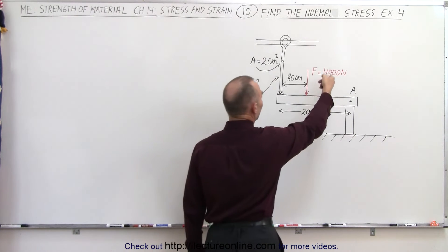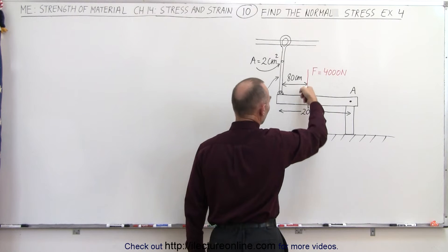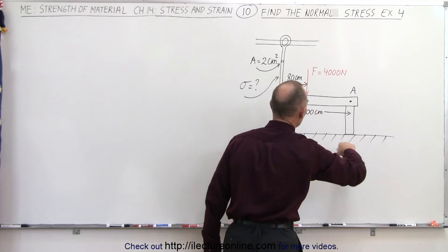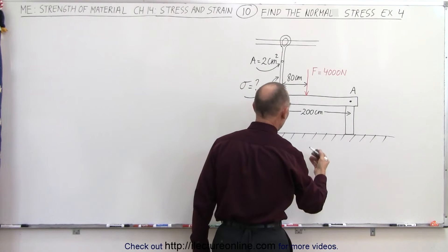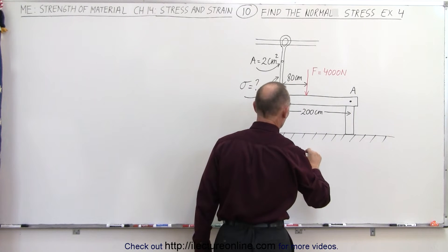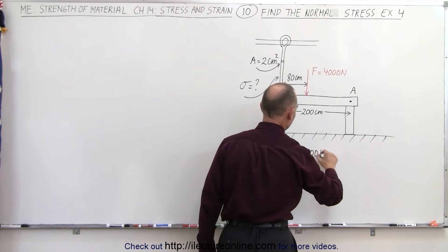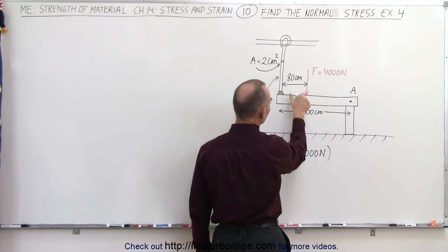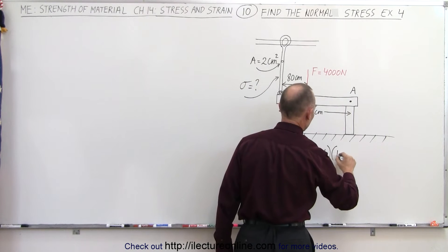So first of all, notice we have a force of 4,000 newtons, which is giving us what we call a counterclockwise moment, which means that this will be a positive moment of a force of 4,000 newtons multiplied times the moment arm, which will be 200 centimeters minus 80, which is 120 centimeters.